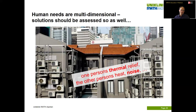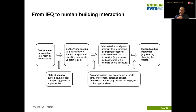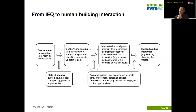Coming now to the second part, which will be shorter. This part of the chapter asks what influences the step from environmental conditions to human-building interaction — which we might want to model in building performance simulation. From environmental conditions, we go to sensory information, then the interpretation of signals, then human-building interaction. At each step there are intervening factors.